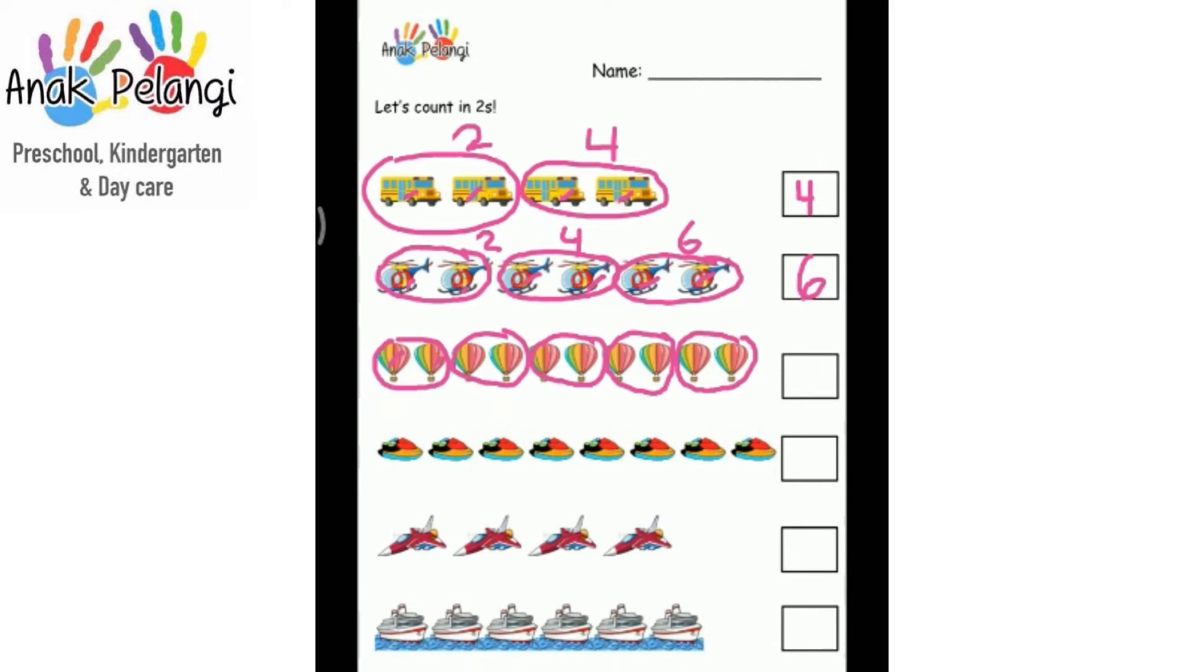One, two. Three, four. Five, six. Seven, eight. Nine, ten. Two, four. Six, eight. Ten. Two, four. How many hot air balloons are there? There are ten. Write ten in the box.